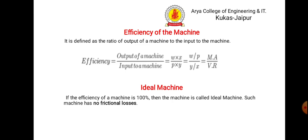Then efficiency. What is efficiency? It is output divided by input. In the case of a machine, it is the output of the machine divided by the input of the machine, which is (W × X) / (P × Y). We can also write this as (W/P) / (Y/X), where W/P is mechanical advantage and Y/X is velocity ratio. So efficiency is also the ratio of mechanical advantage to velocity ratio.